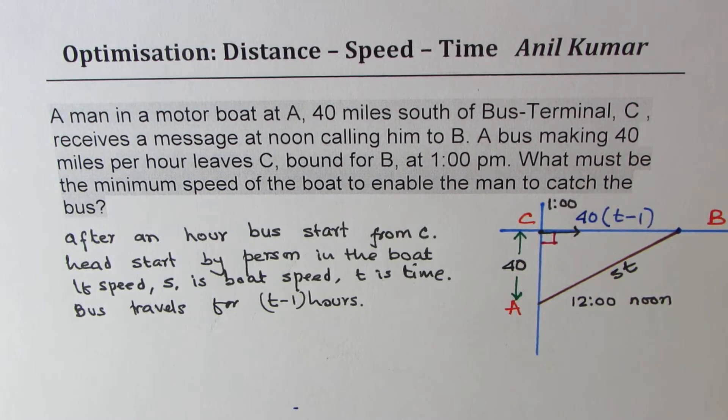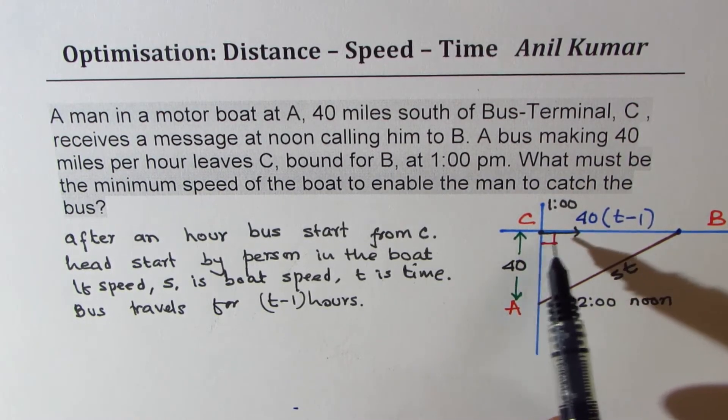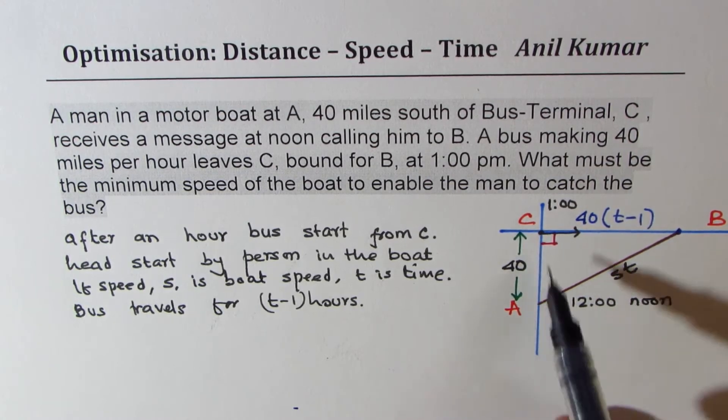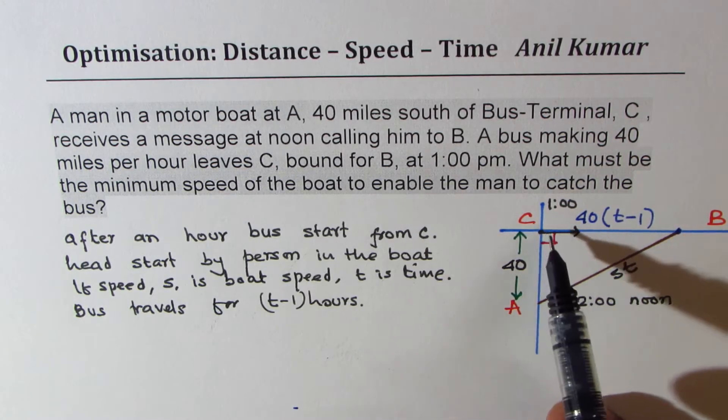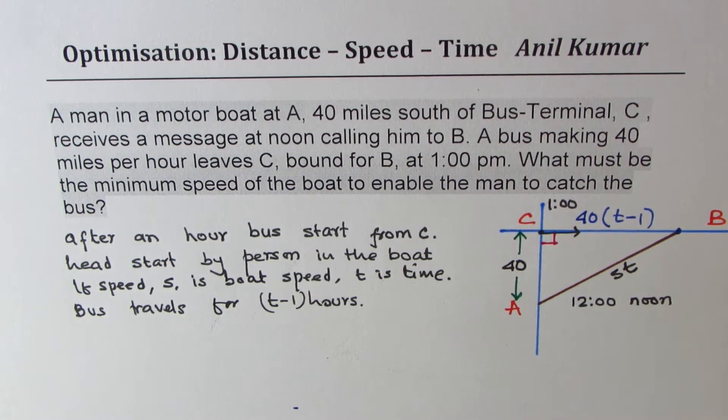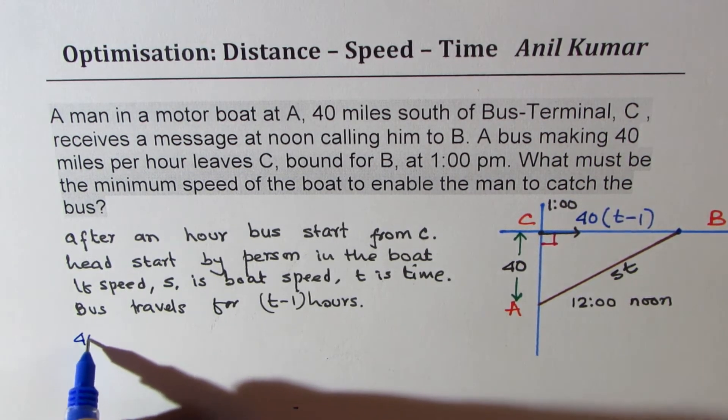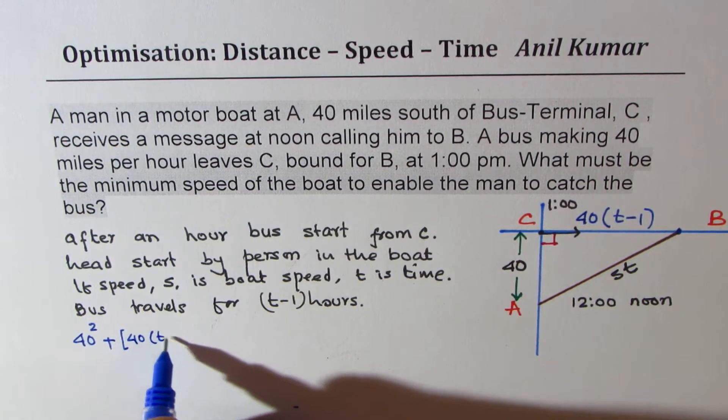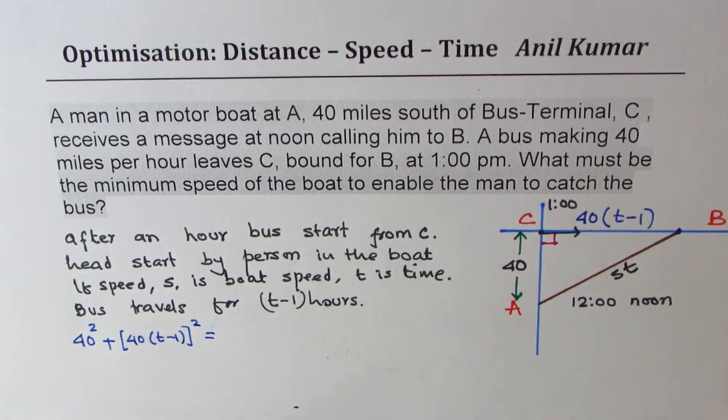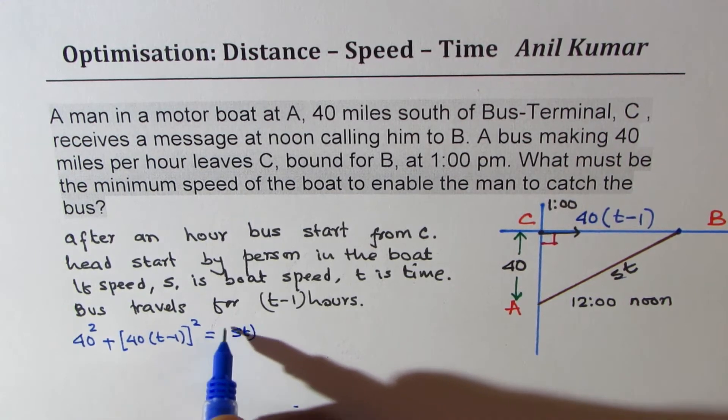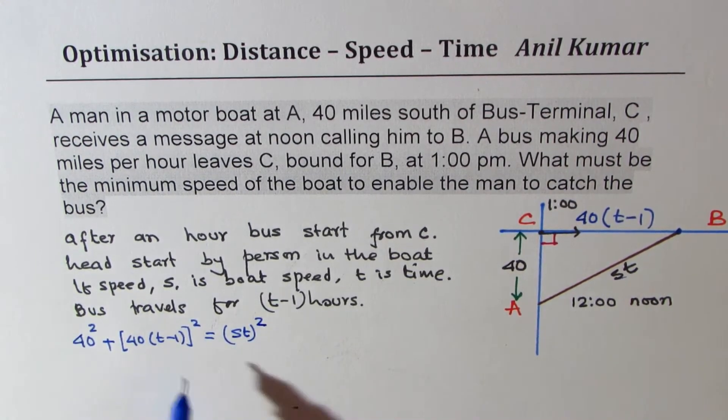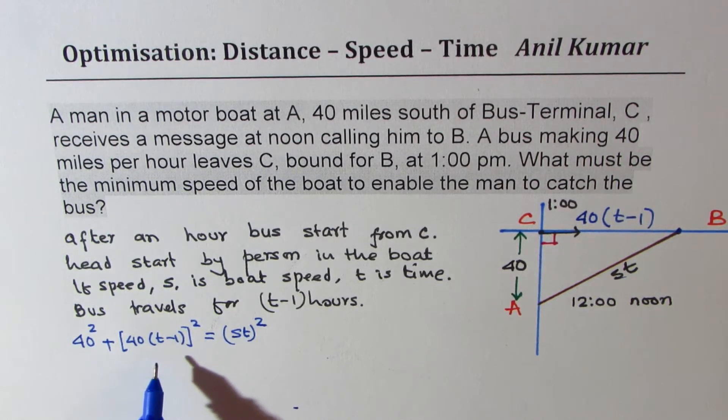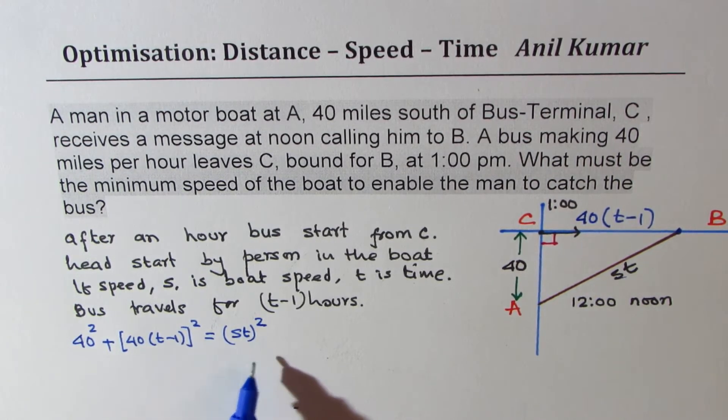Now we have a right triangle, as you can see, so we can relate the two sides with the diagonal, all representing distance in miles. From here, we get our equation to solve, which is 40 squared plus [40(t-1)] squared equals (st) squared. That is the equation which relates. This is a quadratic equation which we can solve and then find the speed.